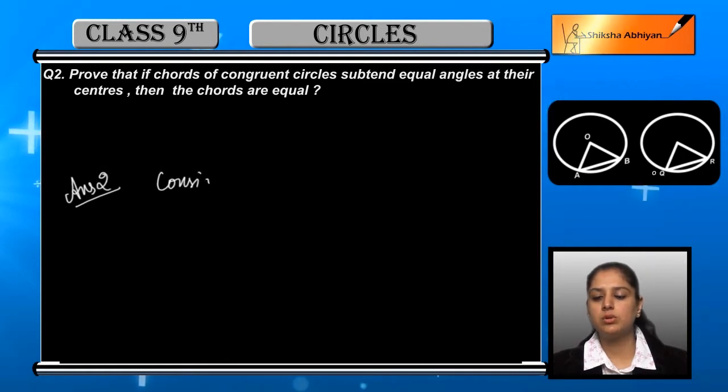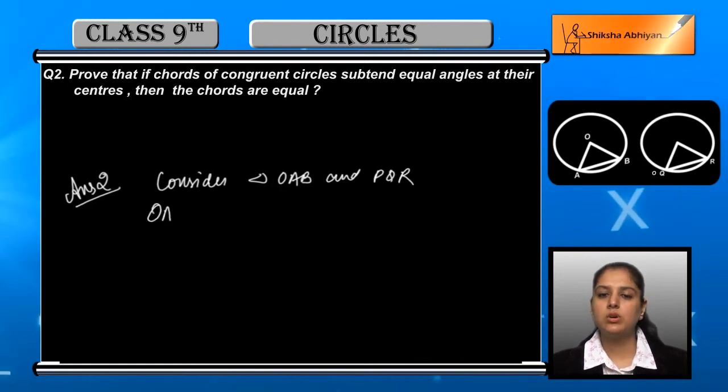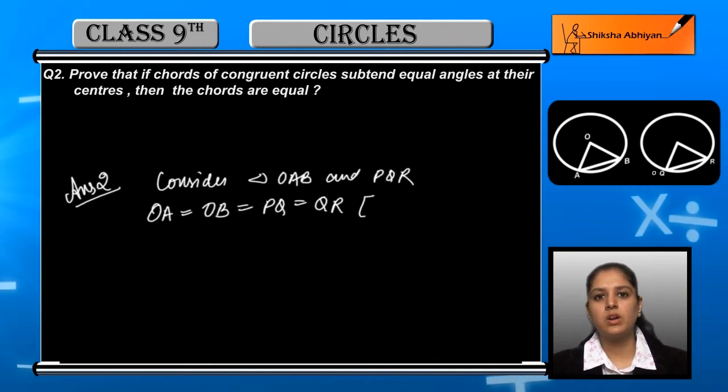We have given that OA is equal to OB is equal to PQ is equal to QR because they being the radii of congruent circles, these four are equal to each other. Now the next thing we have given is angles equal.